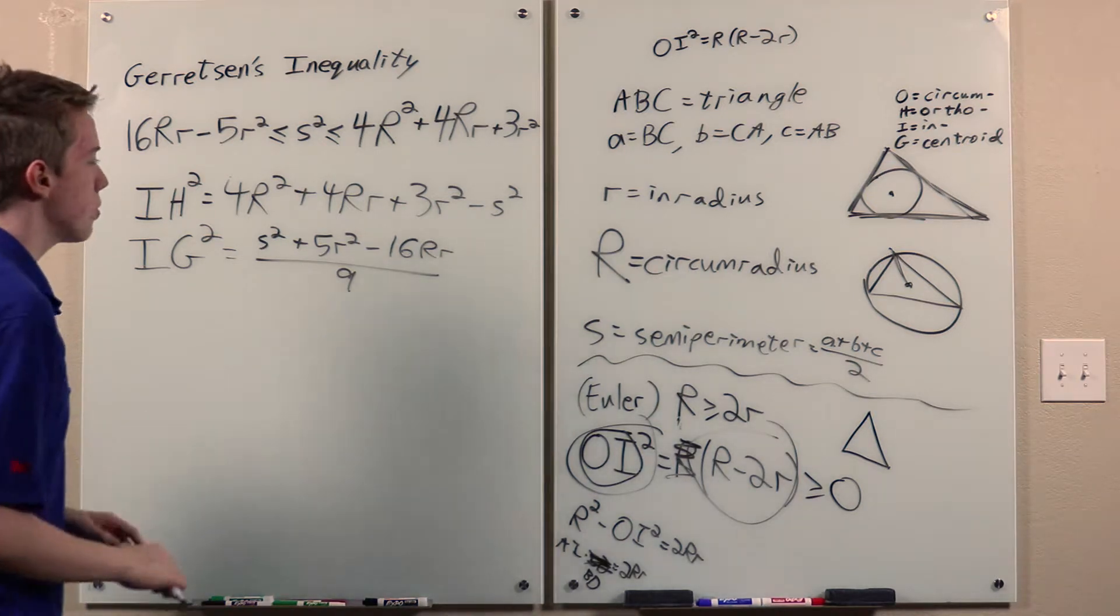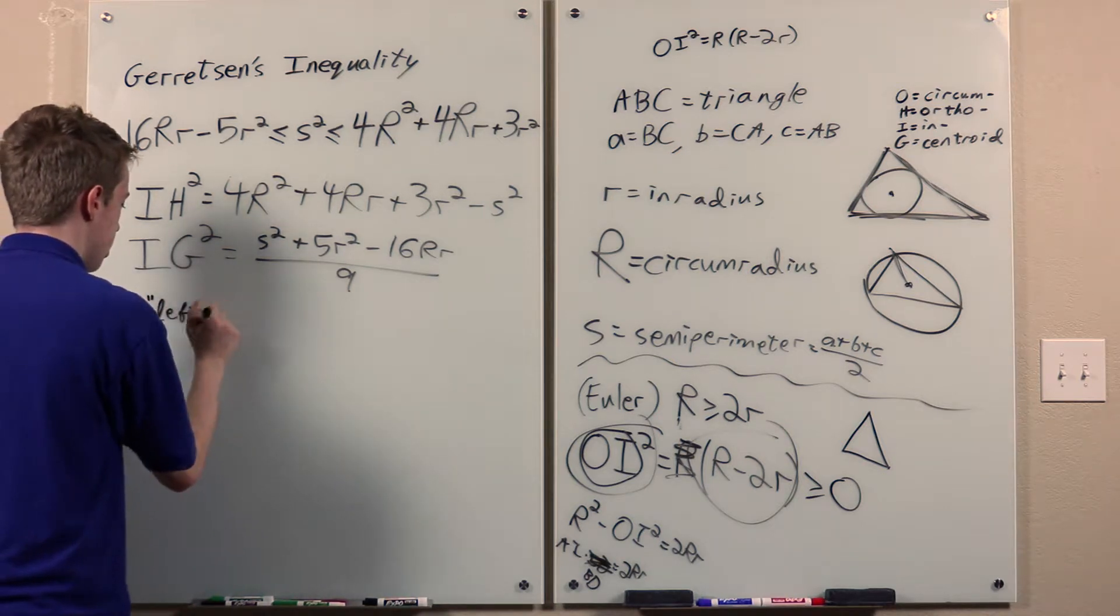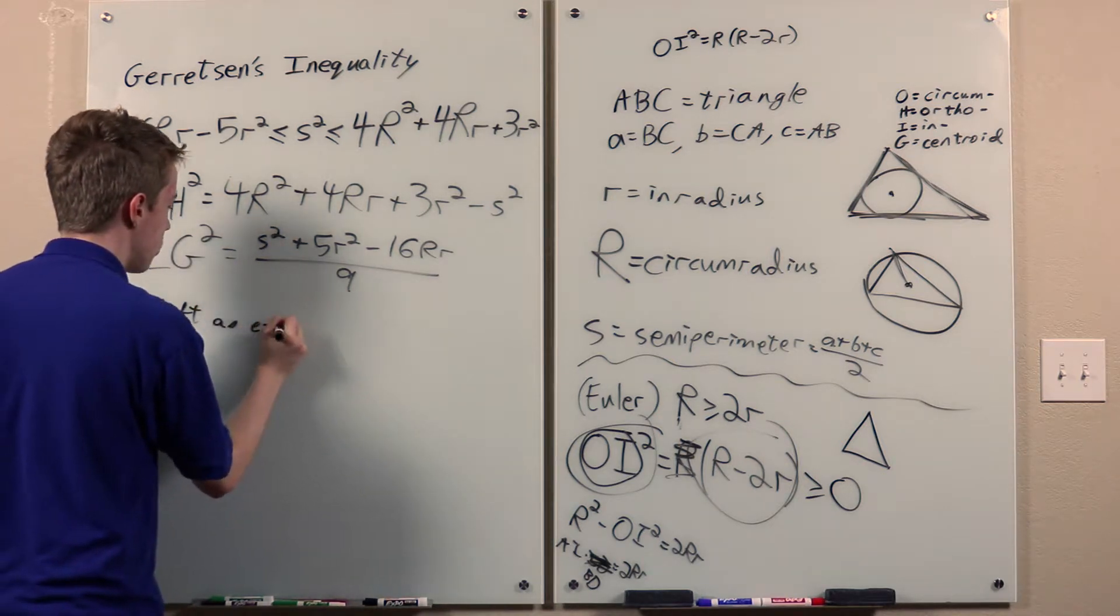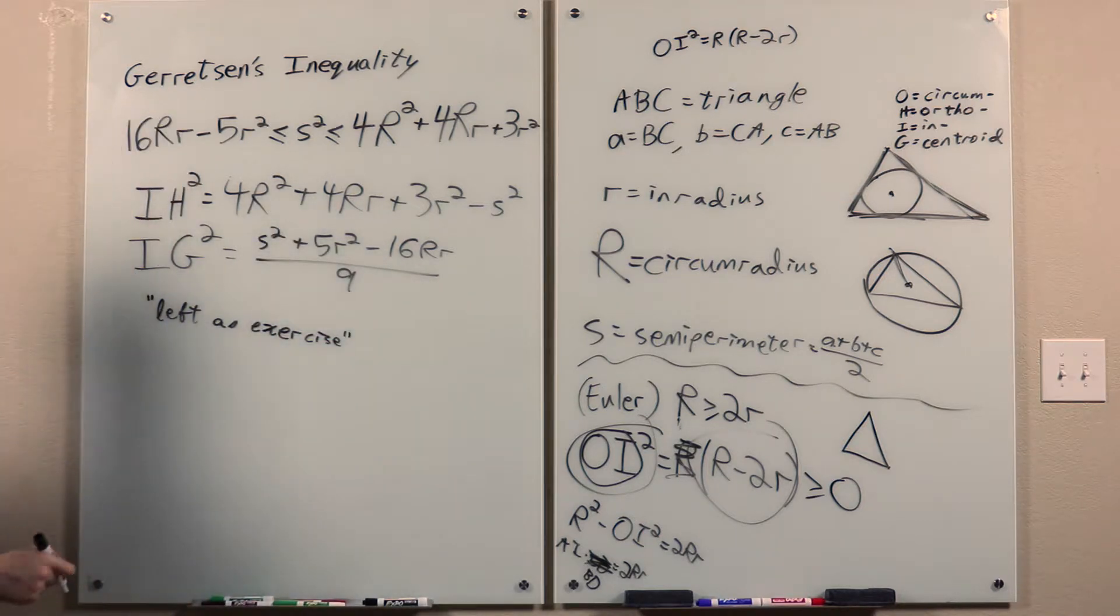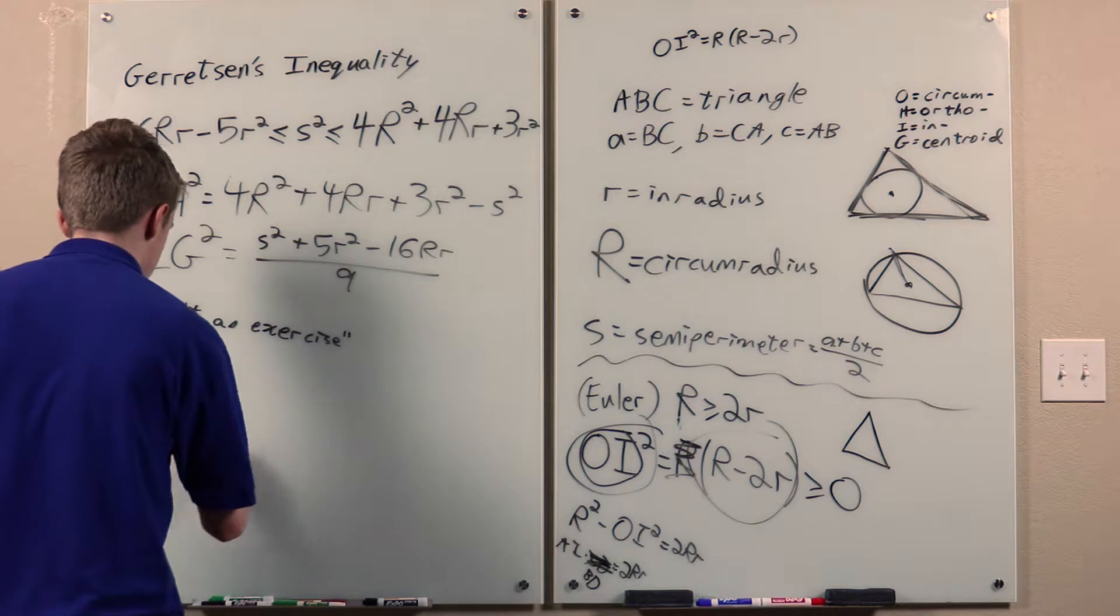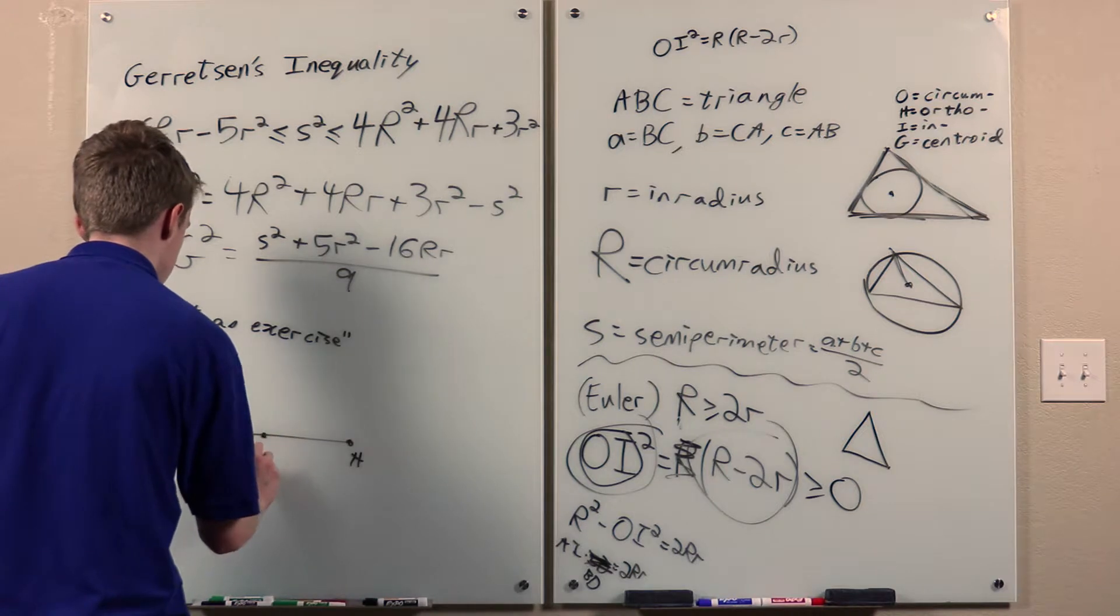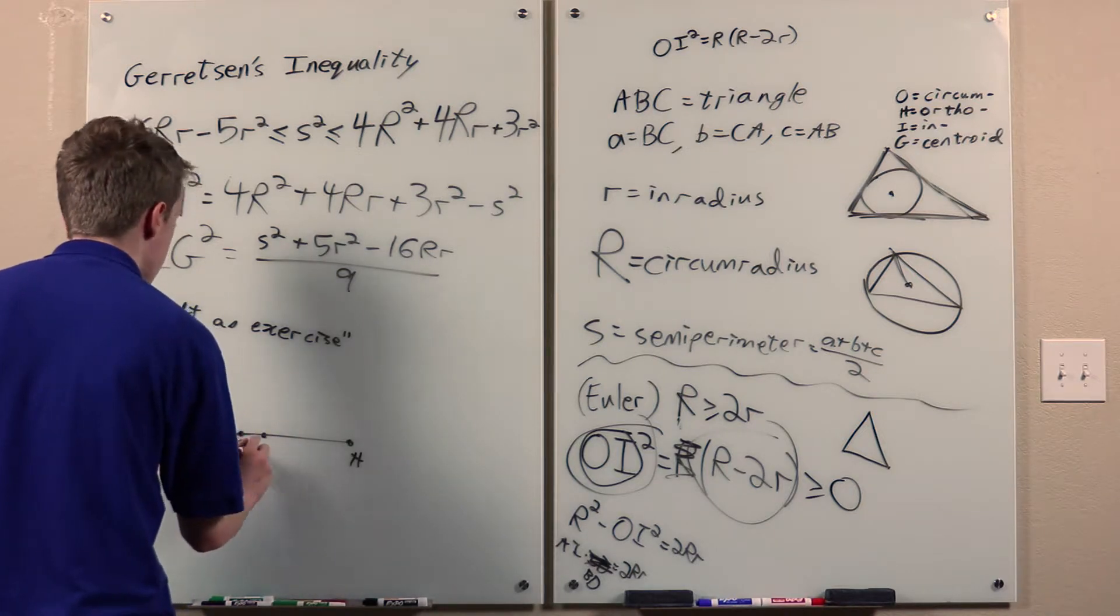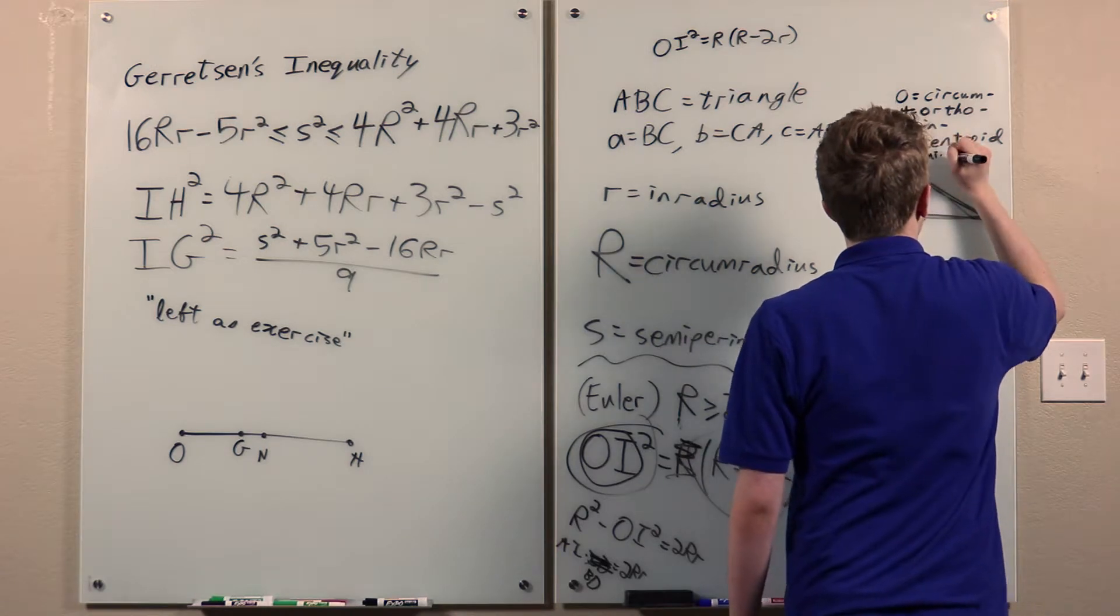I'm sort of going to leave this as an exercise, but the outline of the proof is we look at the Euler line. We have O and H, and then N is the midpoint, and G is the point. N is the nine-point center of ABC.